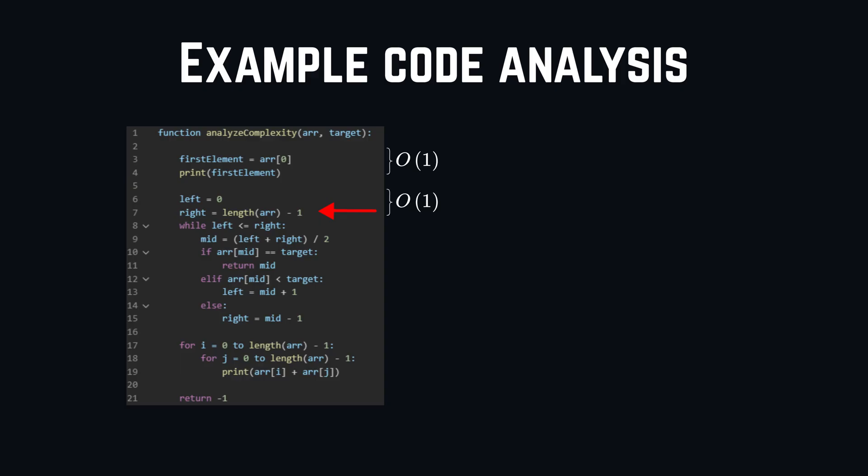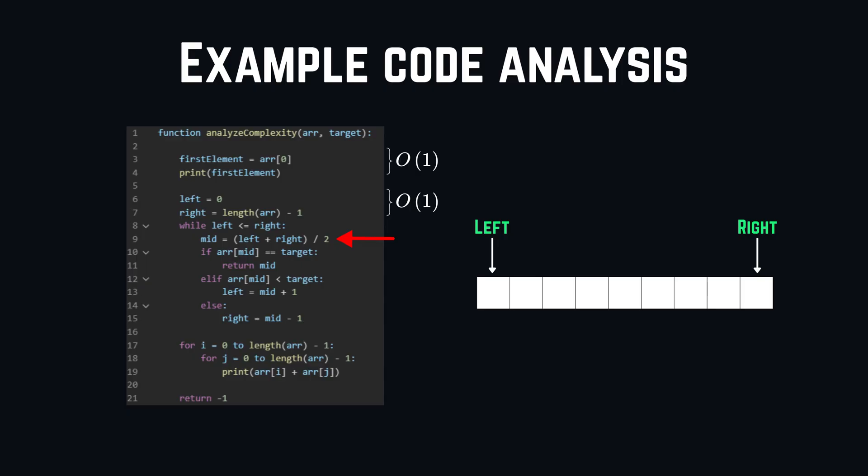So, we have a left and a right variable, which represent pointers to the beginning and the end of our array. Then, in the for loop, we are doing a calculation of the mid, what is basically just between left and right.